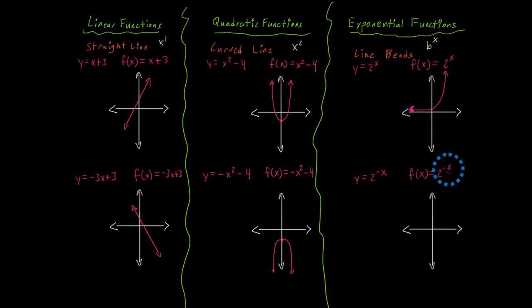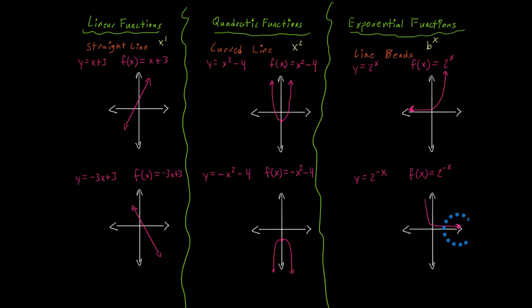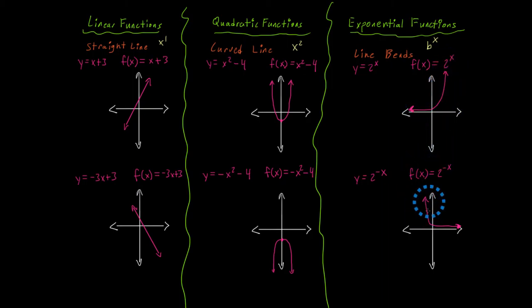For the function below, f of x equals 2 to the negative x power — with a negative x in the exponent — it's kind of like a mirror image of the graph above. It's going to start high and approach the x-axis, leveling off. The line doesn't actually touch the x-axis but approaches it and gets closer as you move further away from zero. So for this function, it starts high, shrinks rapidly, and then levels off after that.